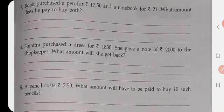Now coming on to the story sums, we have also learned how to do it. The first sum: Rohit purchased a pen for ₹17.50 and a notebook for ₹21. What amount does he pay to buy both? That means we have to get the total amount.